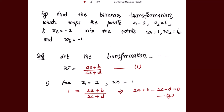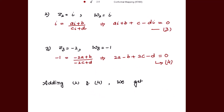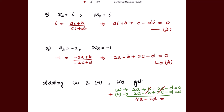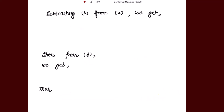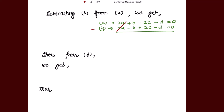Now, if we add equations 2 and 4, the b terms and c terms cancel. We get 4a - 2d = 0, which gives us 2a = d. Next, if we subtract equation 4 from equation 2, the a terms and d terms cancel, giving 2b - 4c = 0, so b = 2c.